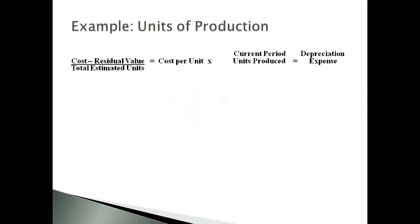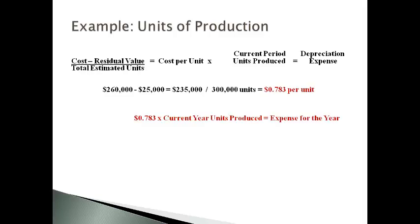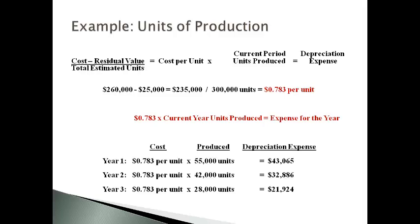The next method is units of production. The formula is used to compute the estimated cost per unit. The estimated cost per unit multiplied by the units produced in each period equals the depreciation expense for each period. The amount of depreciation expense varies directly with the quantity of units produced.